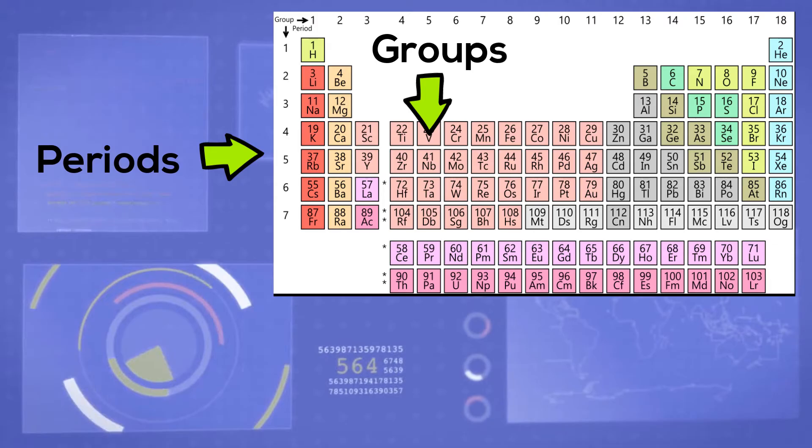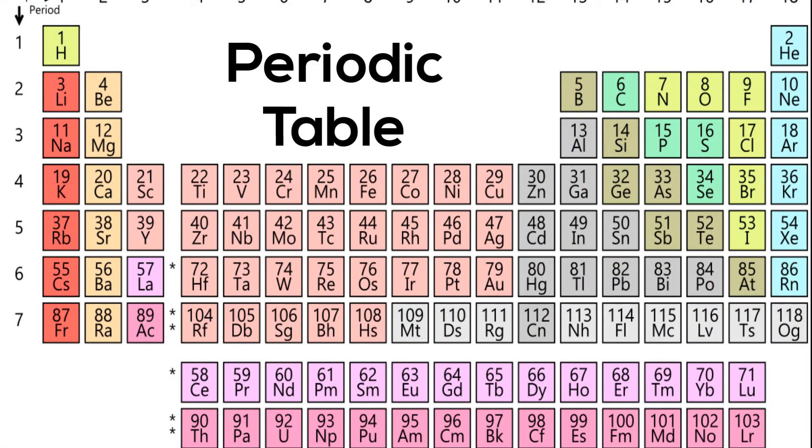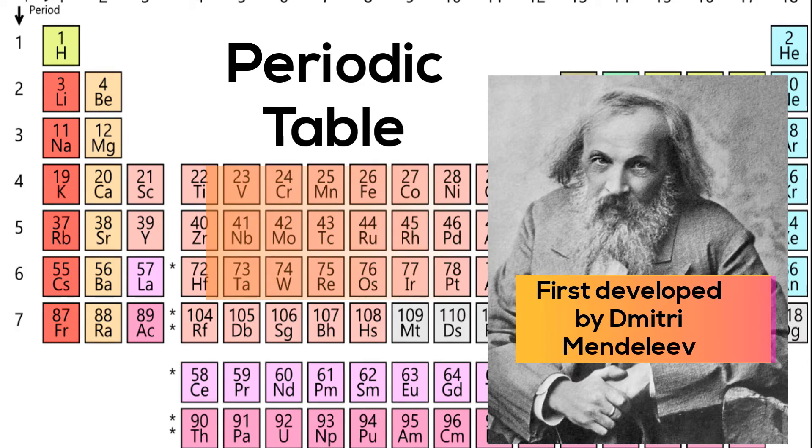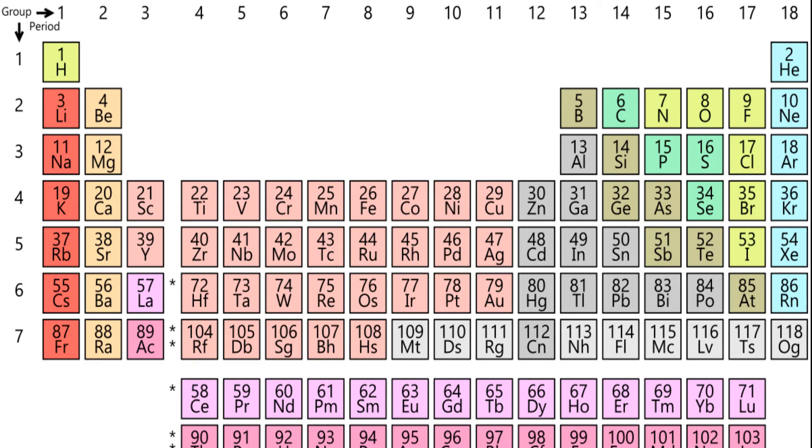The periodic table is an arrangement of the chemical elements ordered by their atomic number and electron configuration. Developed in the 1800s, it still provides a useful framework for analyzing chemical reactions.